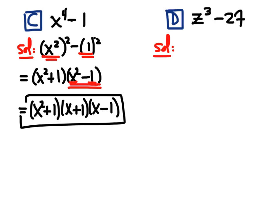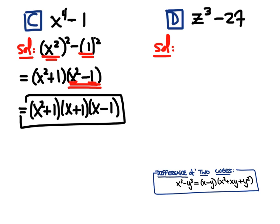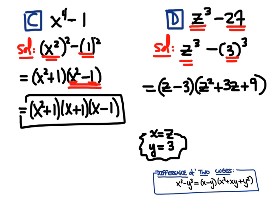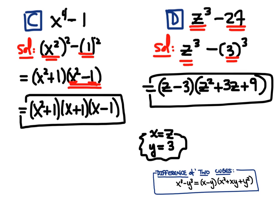Now let's move on to z cubed minus 27. This is a difference of cubes — you'll see the formula at the bottom of the page. We rewrite it as z cubed minus 3 cubed, so z plays the role of x and 3 plays the role of y in the formula. Applying the formula directly, we have two sets of parentheses: z minus 3, times z squared plus 3z plus 9. We're letting x be z and y be 3, and we can always check this is the correct factored form by distributing it out fully.